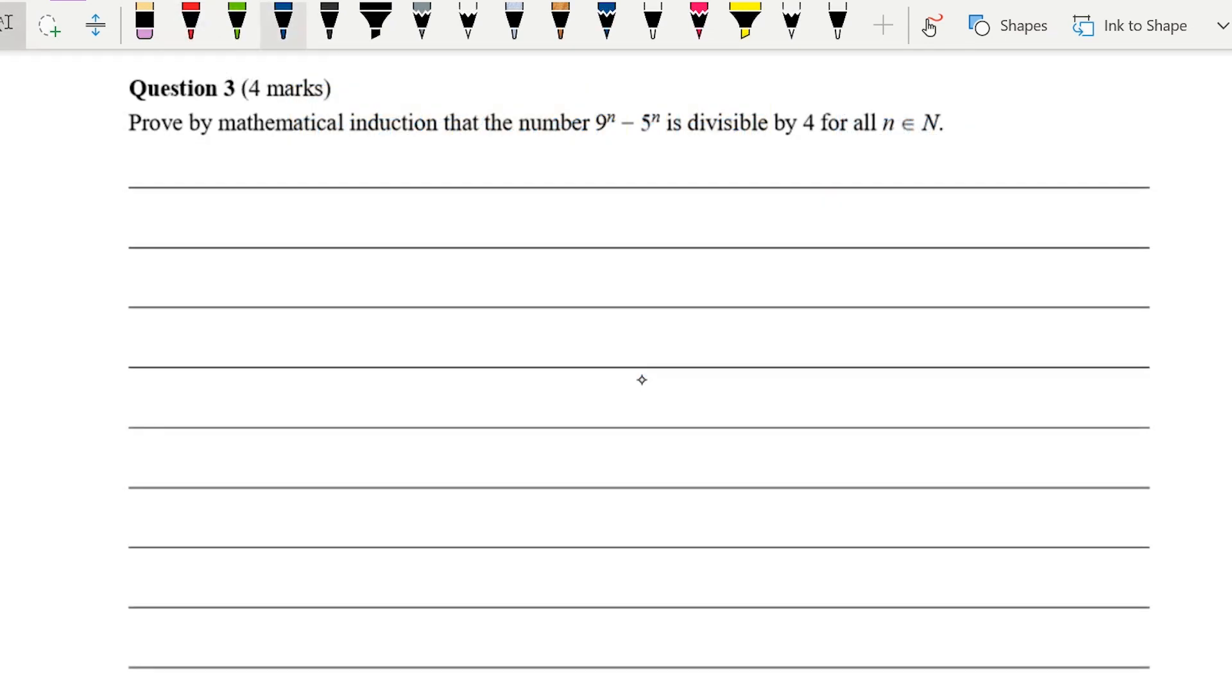I'm going to do one more example of proof by induction. Again, it's a question from the VCAA samples, but this one, it's just a four mark question with a lot of space for us to do the proof. We're going to prove that the number 9 to the n minus 5 to the n is divisible by 4 for all natural numbers n. Again, we're going to start with our base case. It's going to be n equals one, and 9 to the power of one minus 5 to the power of one is 4, which of course is divisible by 4. So the base case is done—a mark in the pocket, in the bag, good, happy, move on.